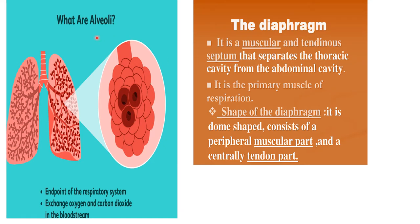Alveoli are the endpoint of the respiratory system. They help in the exchange of oxygen and carbon dioxide in the bloodstream and are grape-like structures. The diaphragm is the muscular septum which separates the thoracic cavity and abdominal cavity. It is the primary muscle of respiration. Its shape is dome-shaped but when it contracts it becomes flat.